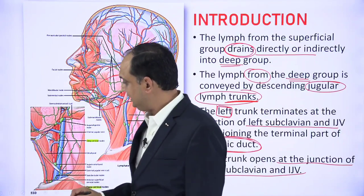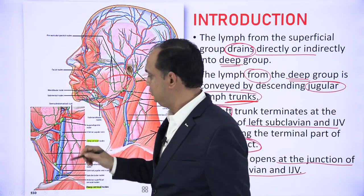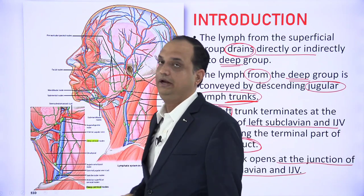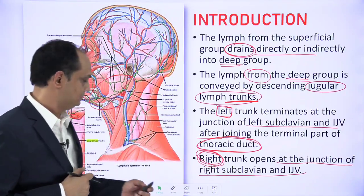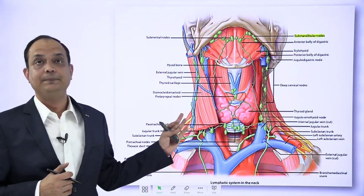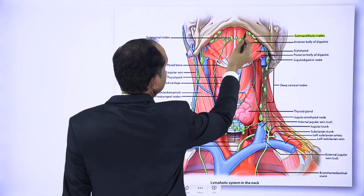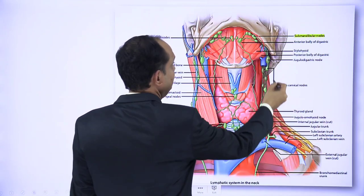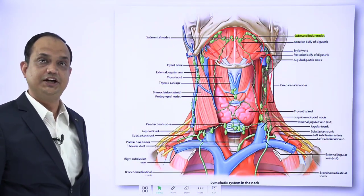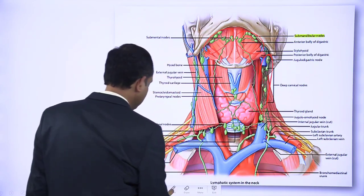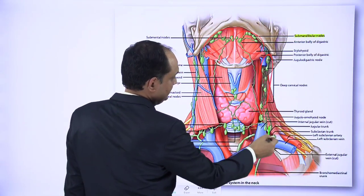After removing the sternocleidomastoid — the superficial muscle in the lateral part of the neck — you can see the internal jugular vein. The lymph nodes around the internal jugular vein are known as the deep cervical group. The deep group is present in the form of a vertical chain, and from its lower part you have the terminal part known as the jugular trunk.